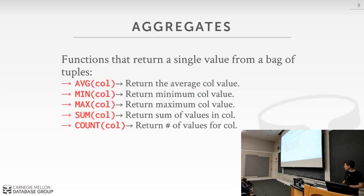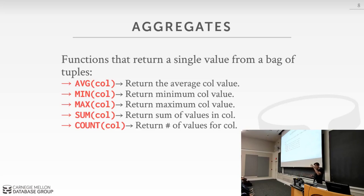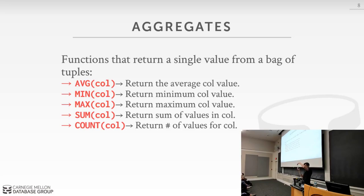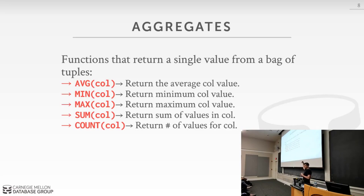Aggregations are functions you define in the output list of your SELECT statement. They take multiple tuples as input and compute some aggregation, producing a single result. The SQL 92 standard defines AVG, MIN, MAX, SUM, and COUNT. For COUNT, you take a bag of tuples and count the number of tuples, producing a single output. Later standards and other systems add things like median, mode, and standard deviation.